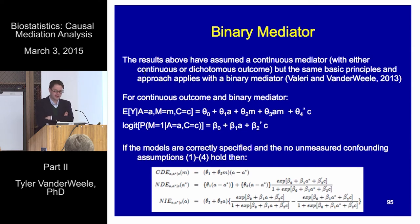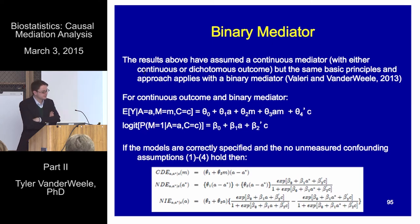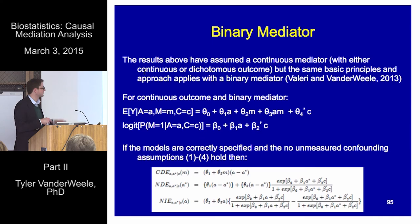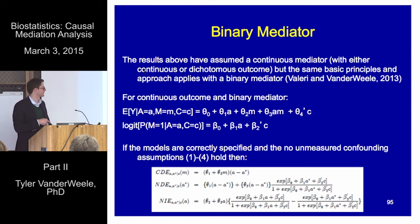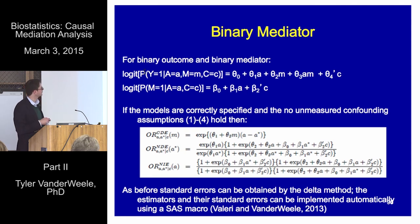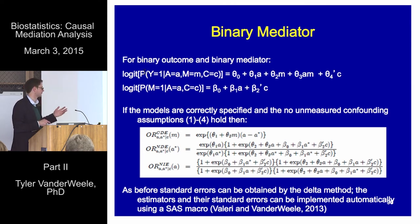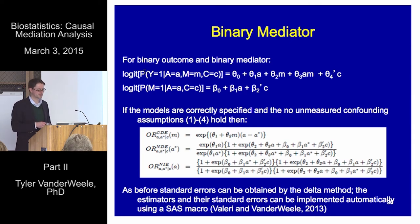We can do pretty much the exact same thing with a binary mediator. With a binary mediator and a continuous outcome, we fit a logistic regression for the binary mediator and a linear regression for the outcome, including exposure-mediator interaction. If confounding assumptions hold and models are correctly specified, the direct and indirect effects are again given by combinations of the regression coefficients — different formulas, but the same principle. Likewise, if both outcome and mediator are binary, we fit two logistic regression models allowing for exposure-mediator interaction, and the direct and indirect effects are given by the corresponding expressions. Standard errors can again be obtained by the delta method, and the macros do this automatically.